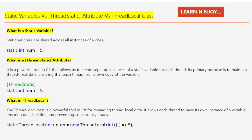What are the benefits of using ThreadLocal over ThreadStatic? First, ThreadLocal provides easier management of thread-local data since each thread has its own instance of the variable — there is no risk of unintentional sharing or interference between threads. Second, ThreadLocal allows for flexible initialization using a lambda expression or a delegate, making it easier to customize initialization logic.